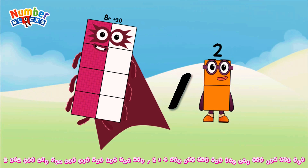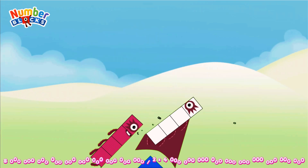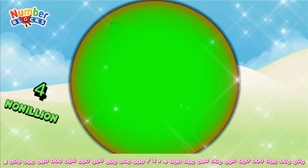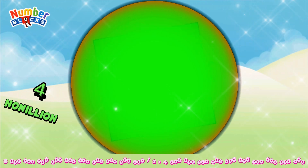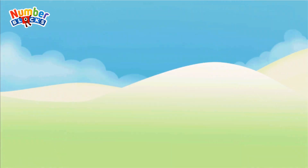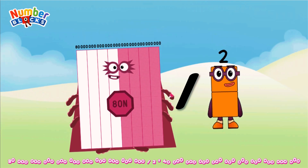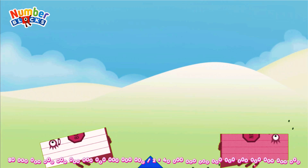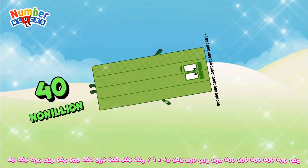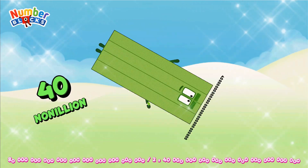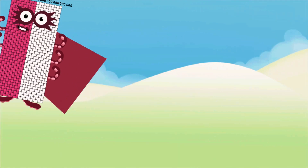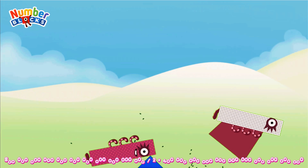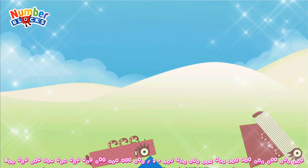Eight octillion divided by two equals four hundred octillion. Eight hundred octillion divided by two equals four hundred octillion.